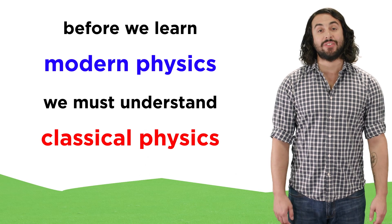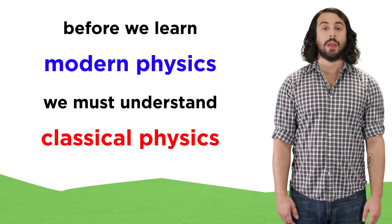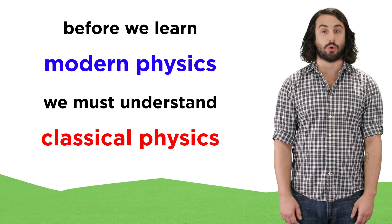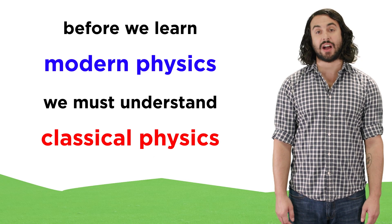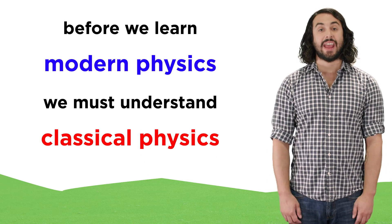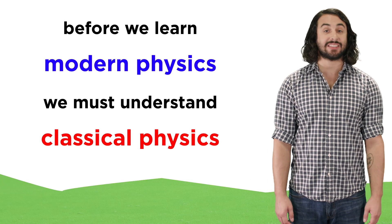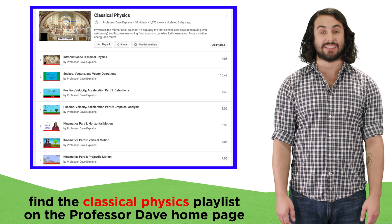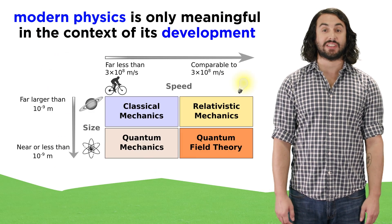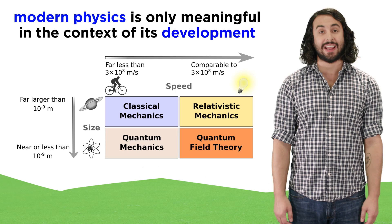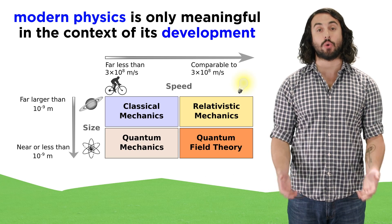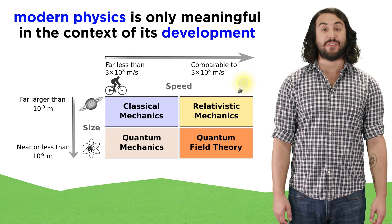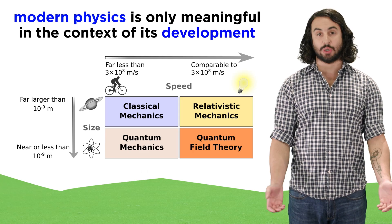It is important to mention that this modern physics course builds upon the knowledge that we developed in the classical physics course. If your intention is to master the concepts of modern physics and you haven't yet learned classical physics, you absolutely must go back and view that playlist in its entirety. Modern physics can only be fully appreciated in the context of its historical development and a discussion of the ways that classical physics failed to describe newly observed phenomena.